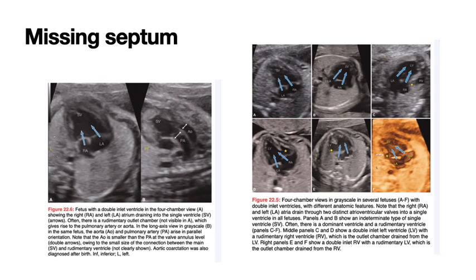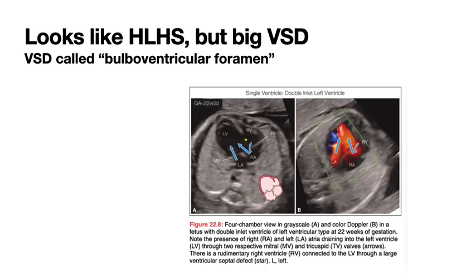In general, there's a missing septum. The ultrasound picture on the left is a very good picture of two normal atria going through two AV valves into a single ventricle — a univentricle. It may look like hypoplastic left heart, but there is a very large VSD to the point where it doesn't really even count as a septum. When talking about double inlet ventricle, that VSD is referred to as a bulboventricular foramen.